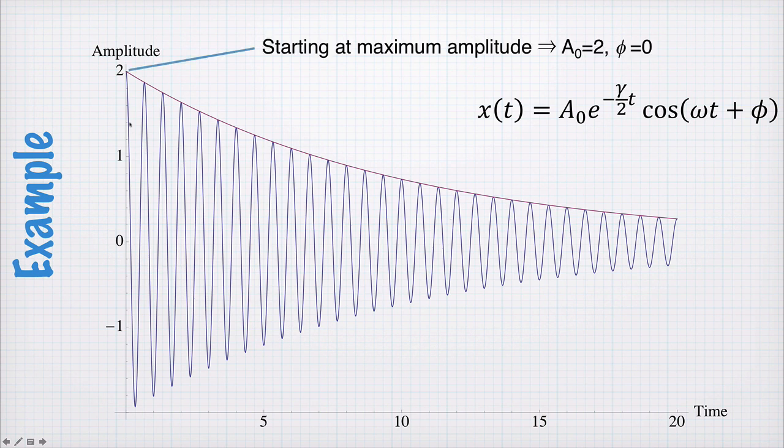So the starting amplitude, A₀ is equal to 2, because that's what we have at time equal to 0, so A₀ must be equal to 2. And we see it's also at the peak here, so it's a cosine function. So the phase here, φ, must be equal to 0. So we've got φ equal to 0, and A₀ equal to 2 from this starting position here.